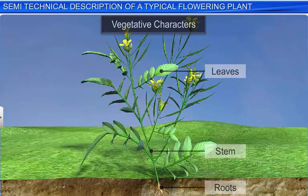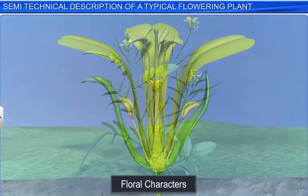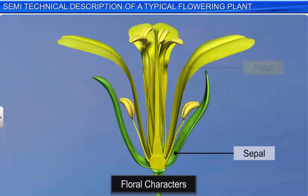This is followed by a description of its floral characters and flowering parts, such as sepals, petals, stamens and carpels.